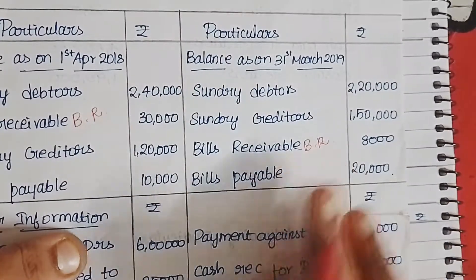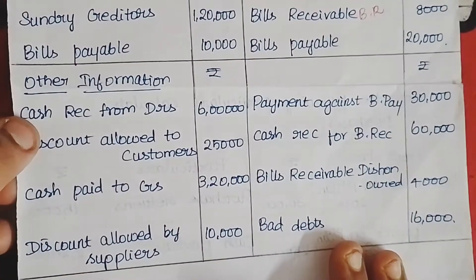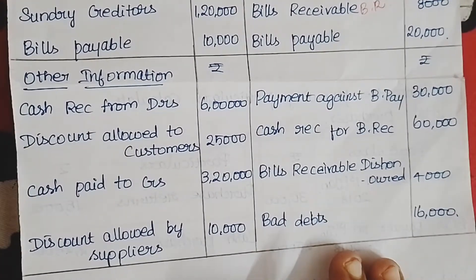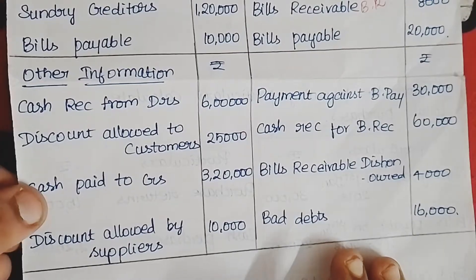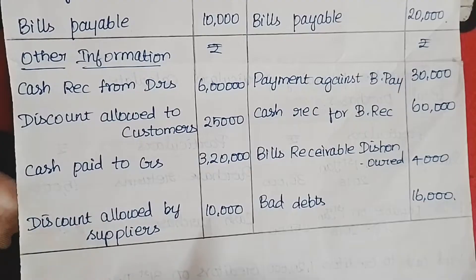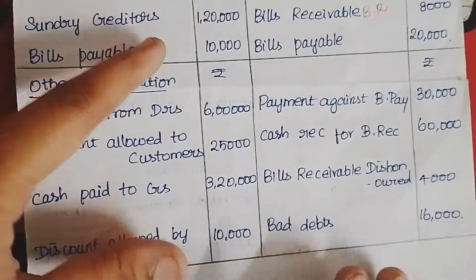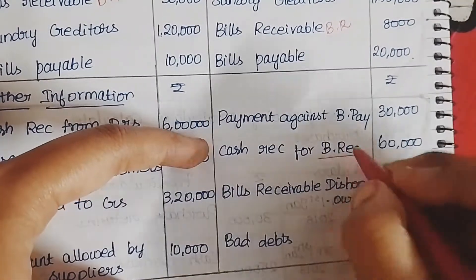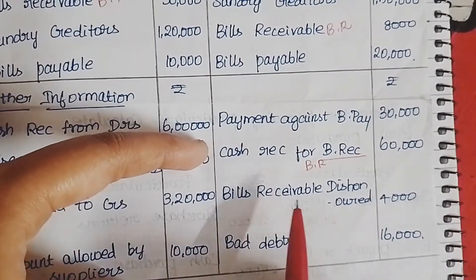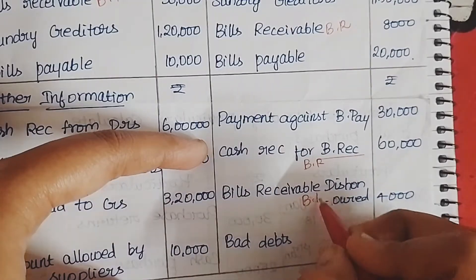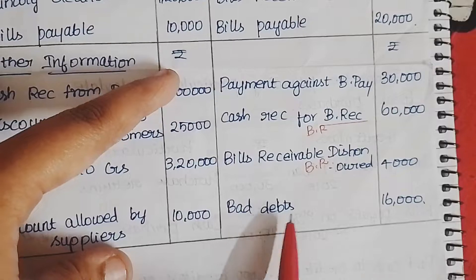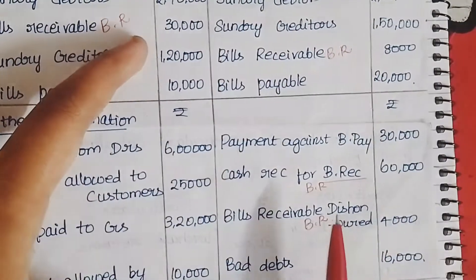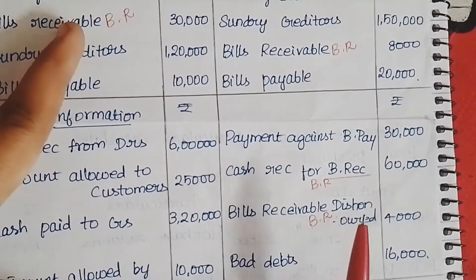So there are bills receivable — we will go to the bills receivable account. Cash received from debtors goes to the debtors account. Discount allowed to customer goes to the debtors account. Cash paid to creditors goes to the creditors account. Discount allowed by supplier goes to the total creditors account. Payment against bills payable goes to bills payable. Cash received for bills receivable and bills receivable dishonored — both go to bills receivable.